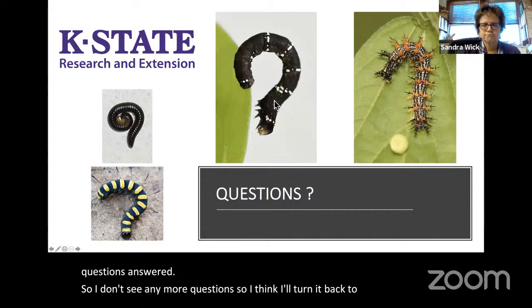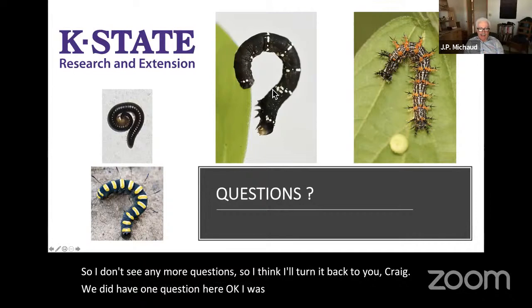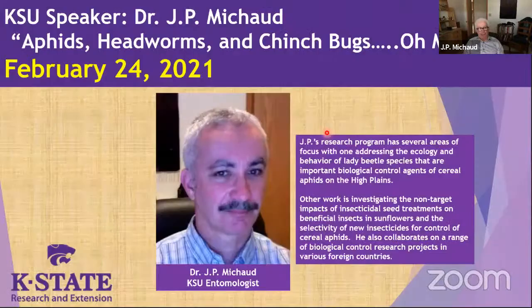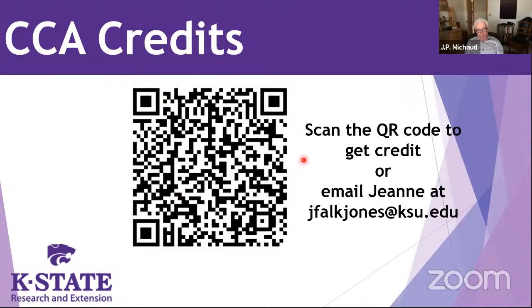A question from Keith on false chinch bugs versus true chinch bugs — are they a threat? Generally, no. False chinch bugs can come off weeds like mustards in large numbers, but they don't do the same kind of damage to the plant. There is a threshold for false chinch bugs on ripening sorghum heads — something like 200-plus per plant. They're not nearly as big a concern because they don't have the toxic saliva and don't really harm the plant, so it takes a lot more of them. But they will feed on grain when it's at the milk stage — all those bugs like the grain really soft — and if there's enough of them they can do some damage, but it's pretty rare.